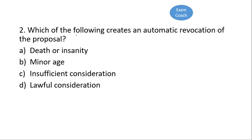Our next question is: which of the following creates an automatic revocation of the proposal? Option A is the correct option — that is death or insanity. A proposal is automatically revoked when knowledge of the death or insanity of the parties comes to the knowledge of the offeror.